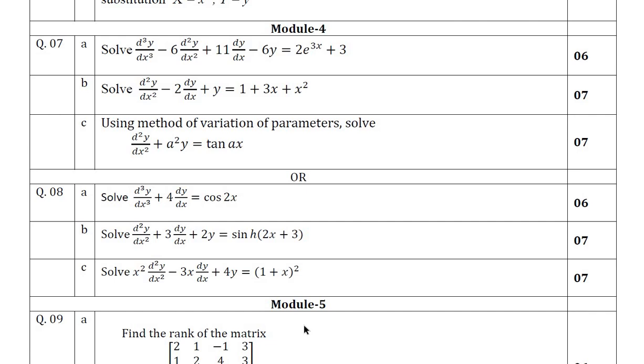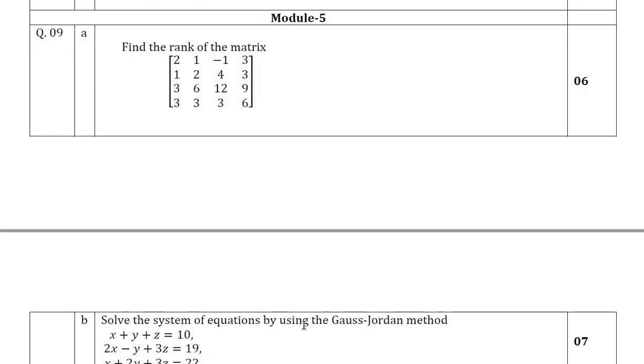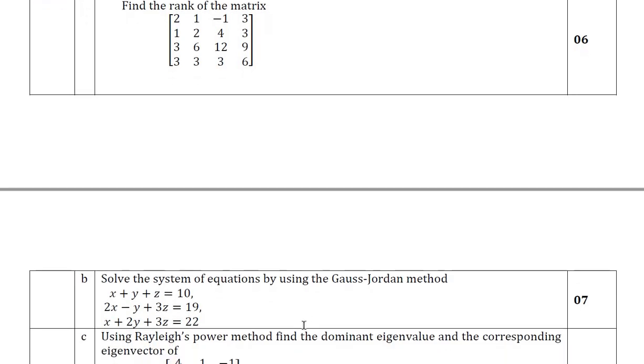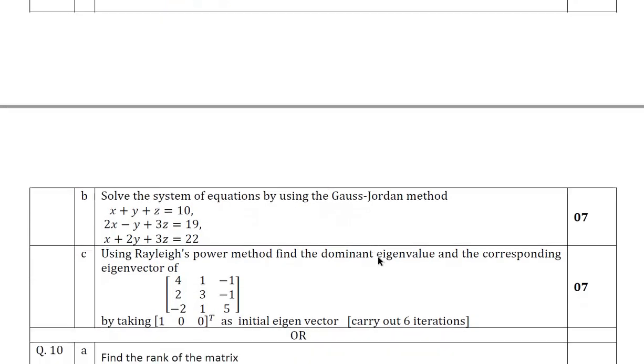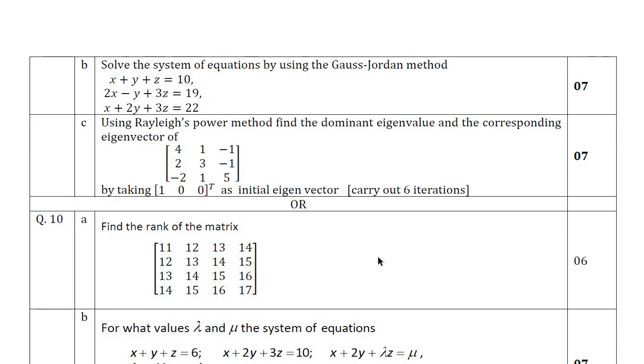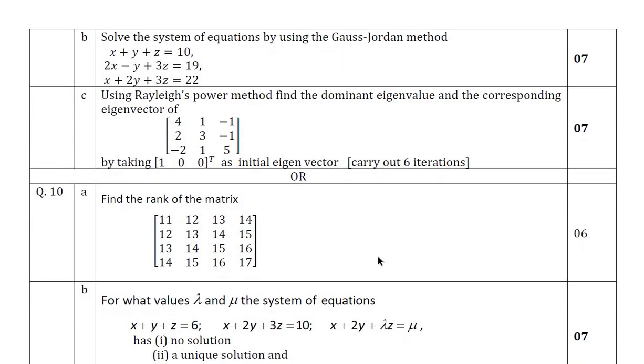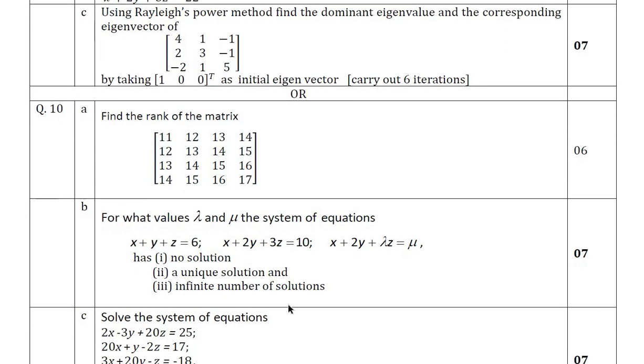If you move on to last module, a very easiest topic in your first semester called linear algebra. Definitely one question will be a rank of the matrix. You should find the rank of the matrix. Then they have asked Gauss-Jordan. Question number 9 they have asked for Gauss-Jordan, then Rayleigh's power method. And question number 10 again they have asked for rank of the matrix. And from the given system of equation, you require to find lambda and mu. And you should decide whether the given system of solution is one solution or unique solution or infinite solution.